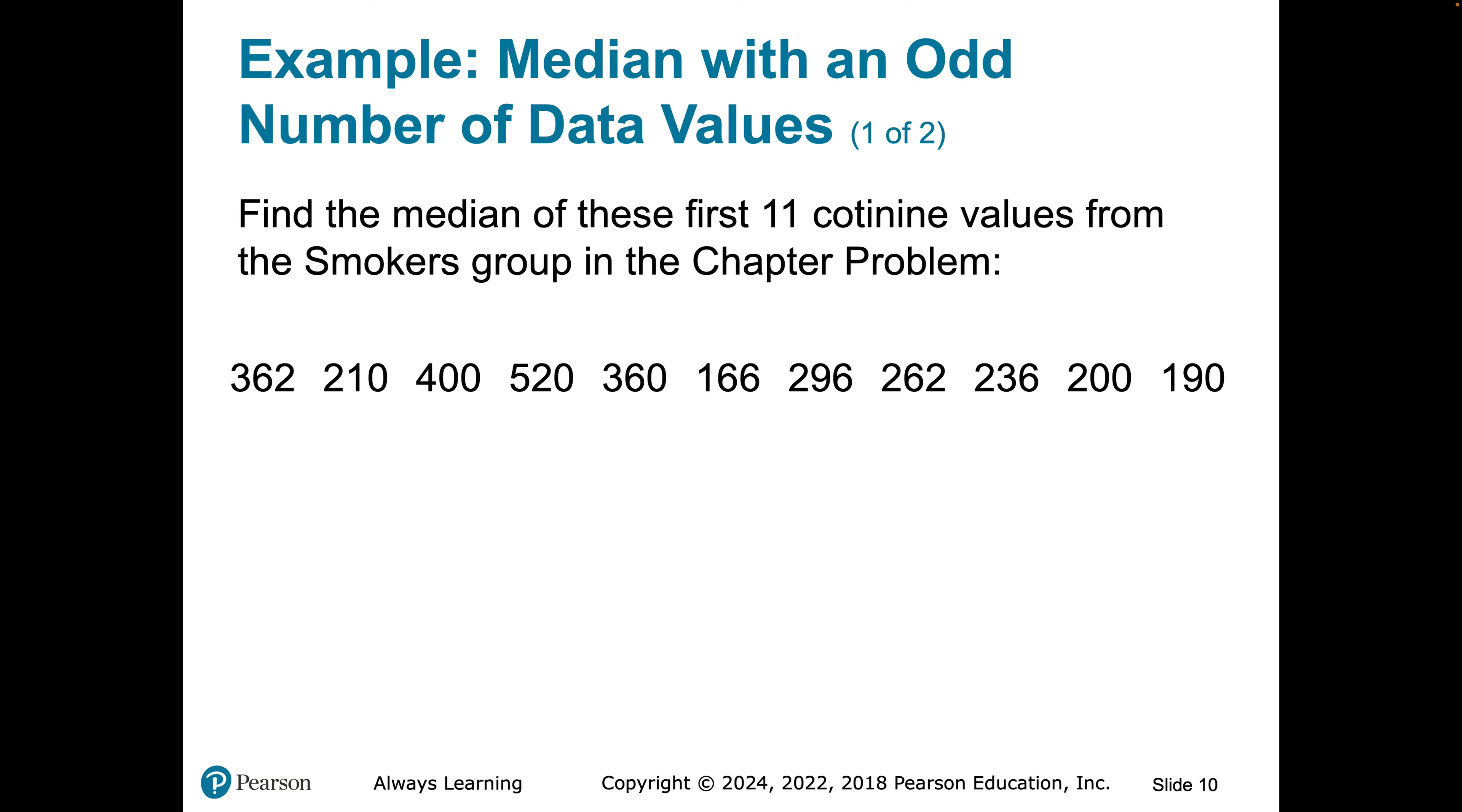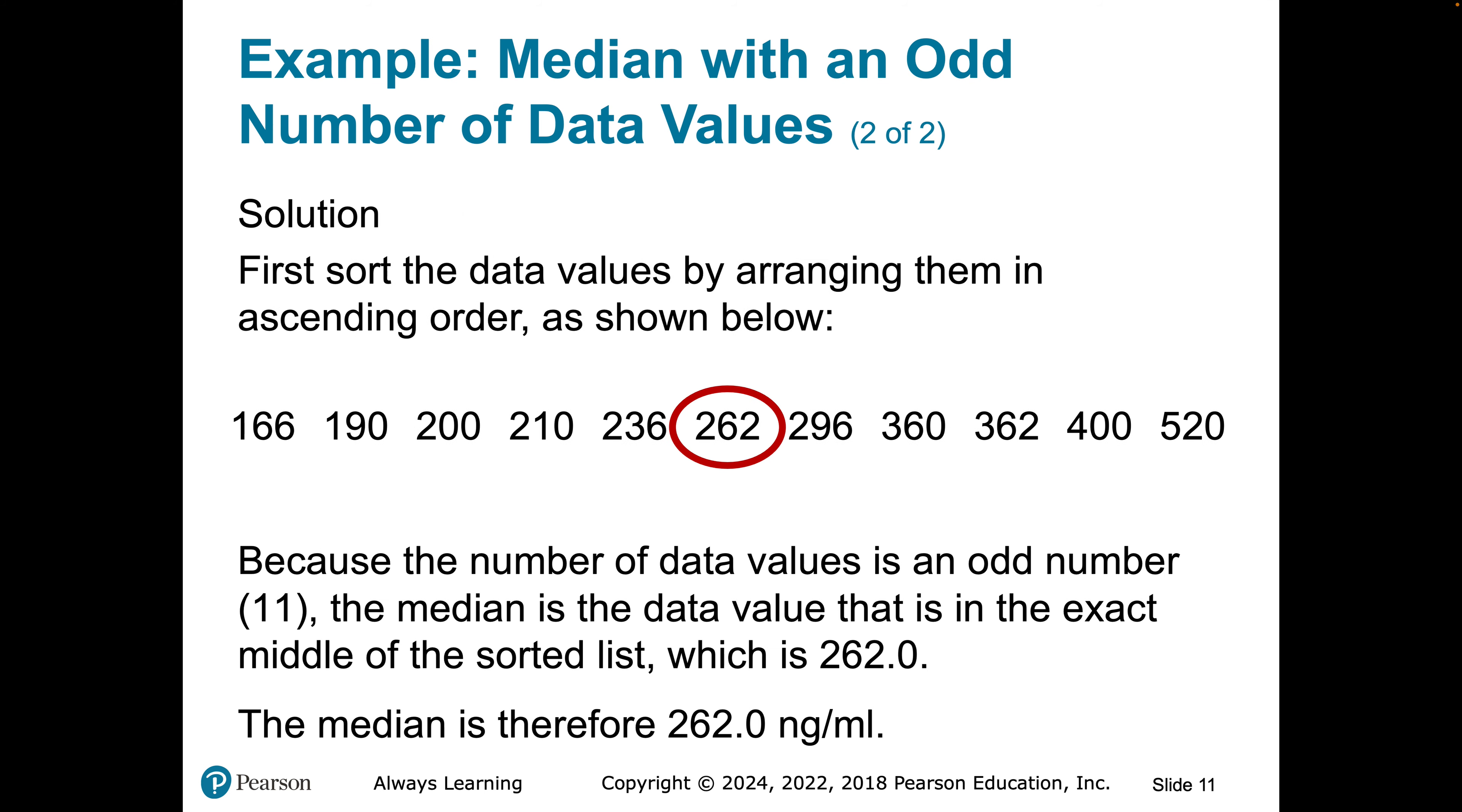So the median, if we have an odd number of data values, it turns out that you'll have a distinct value in the center. So to create the median here, we have to rearrange these data from low to high. And then we go smack dab to the center and the data in the center is 262. So we would say the median of the data set is 262.